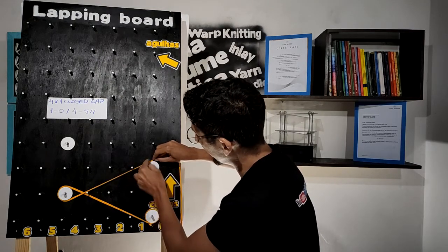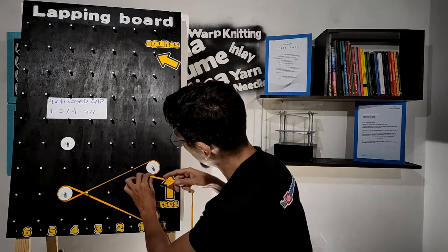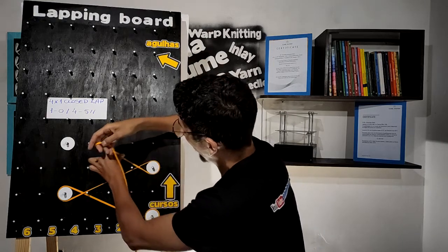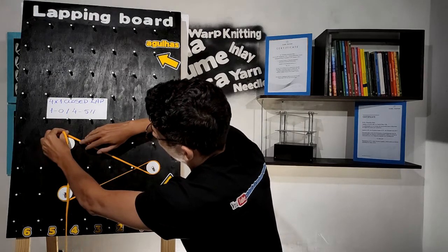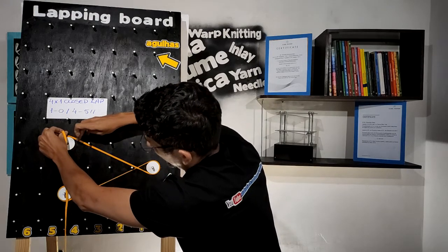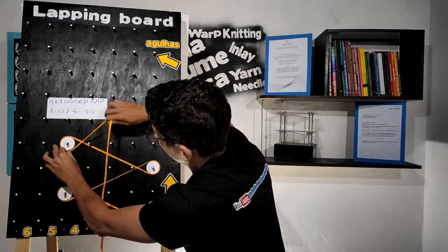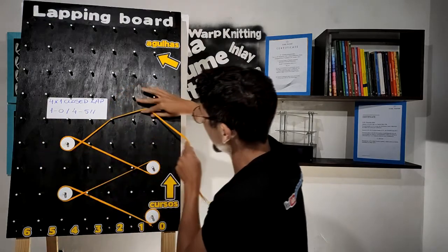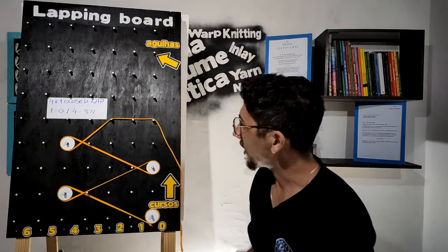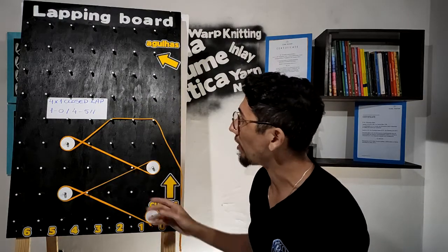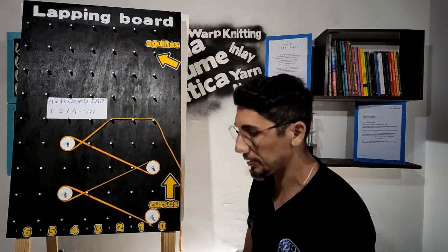Here we have swinging in, overlap, swinging out, and a long underlap. This is the representation of the four-by-one closed lap on the lapping board.